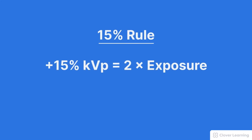The relationship between KVP and receptor exposure is actually defined by the 15% rule. As an example, if we increase KVP by 15%, this will double the receptor exposure.